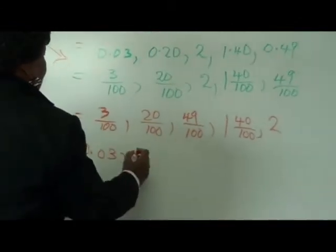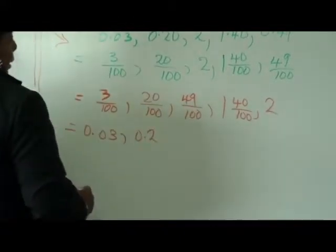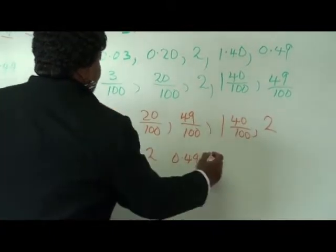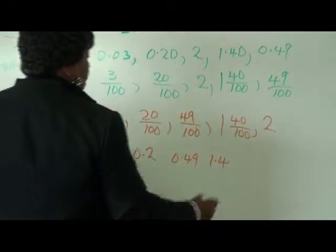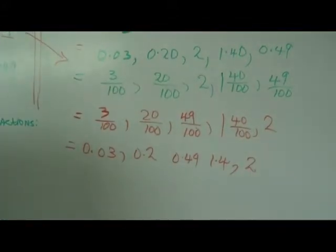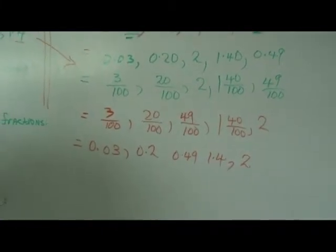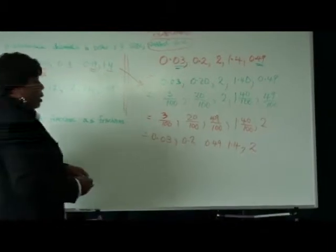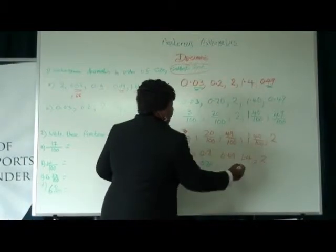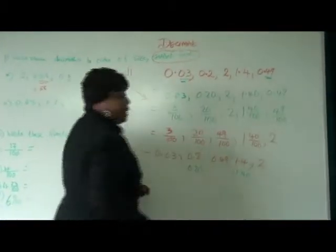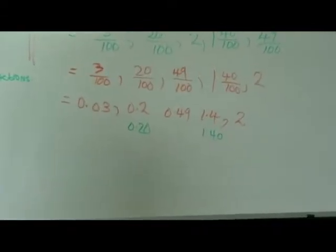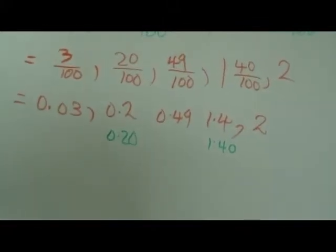0.2. And then it is 0.2. Yes. 0.49. And it is 0.49. 1.4. 1.4. And 2. And 2. Now, just because we were telling them about hundredth and hundredth position teachers, if the students write this as 0.20 and this as 1.40, it is correct. It is correct. So give the children their marks. Give the children their marks.